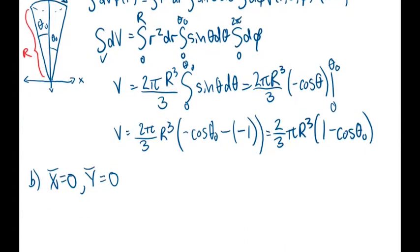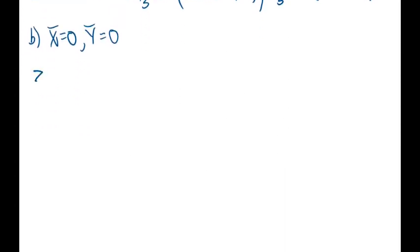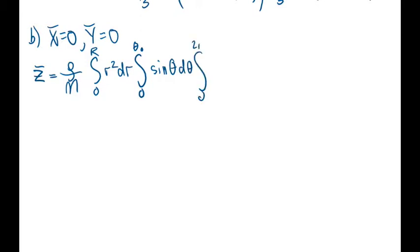So we'll just do the center of mass in z. The center of mass in z equals the density over the mass, and since the density is uniform, it'll equal the mass over volume when we plug it in. Then we have the integral from 0 to R of r squared dr, 0 to theta naught sine theta d theta, and 0 to 2pi d phi, and then the function of position, which in this case is z, which equals r cosine theta.